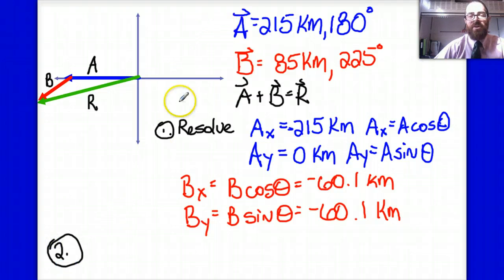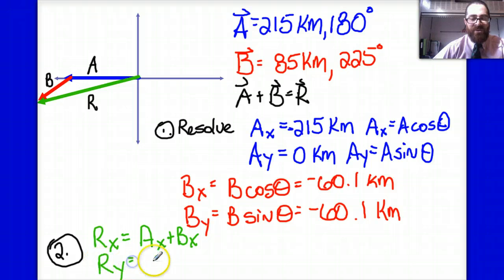Part two of the problem is going to be to find the components of your resultant. So I can say that the x component of my resultant is going to be AX plus BX and the y component of my resultant is going to be AY plus BY.